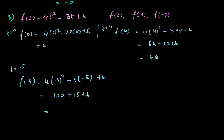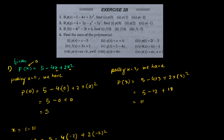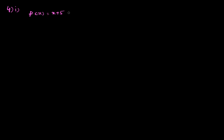That completes question three. For question four, we need to find the zeros of some polynomials. The first one: p(x) equals x plus 5. We equate the polynomial with zero: x plus 5 equals 0, so x equals minus 5. The zero of this polynomial is minus 5.